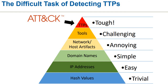Detecting TTPs is the most difficult part. Finding a hash value is very easy, an IP address is very easy, domain names are simple tasks, and network artifacts are manageable for a good analyst or hacker. Tools are more challenging because there are a lot of tools to learn and work with. But the toughest part is knowing the TTPs.